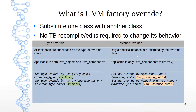The second type is instance override. As the name implies, you are overriding only a specific instance — you want to override a particular instance with an override type. Because instances imply hierarchy, instance override is only applicable to UVM components, not to UVM objects, transactions, or sequence items.